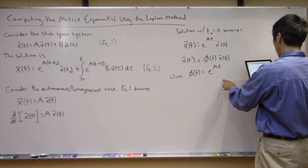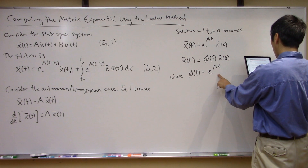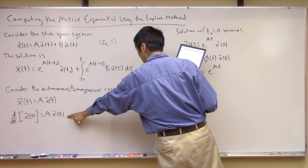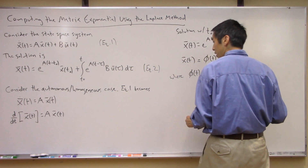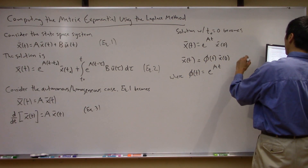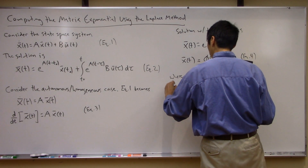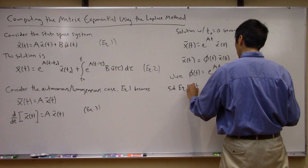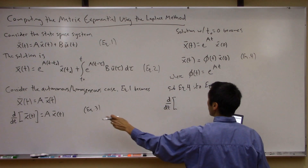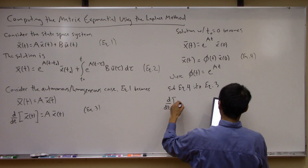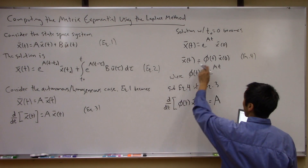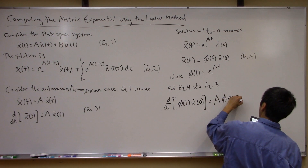Let's substitute the analytical solution into the equation of motion — our ordinary differential equation or simplified state-space representation. To be consistent with my notes, let's label this equation three and the analytical solution equation four. Substituting equation four into equation three, equation three becomes: d/dt of [phi(t) times x(0)] equals A times [phi(t) times x(0)].